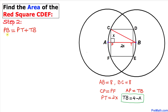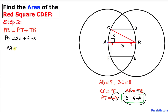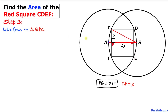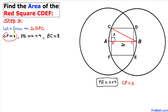Now let's observe that PB = PT + TB. So PB = 2x + (4 - x), which simplifies to PB = x + 4. Keep that in mind. Now let's focus on triangle BPC. Its side CP = x, PB = x + 4, and BC = 8 as the radius.